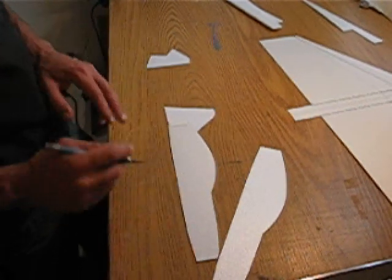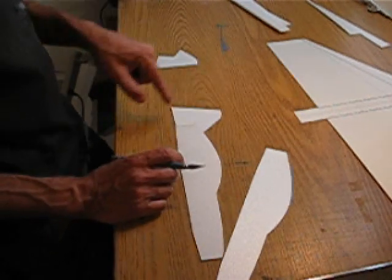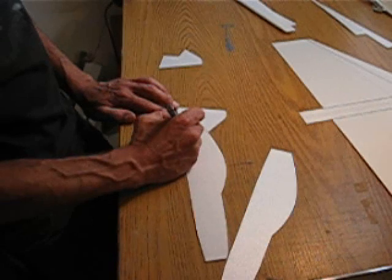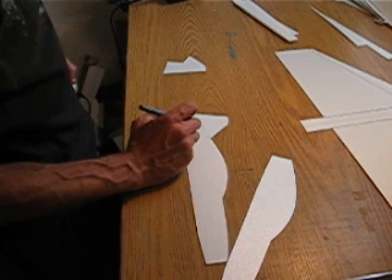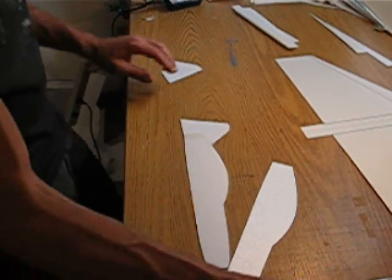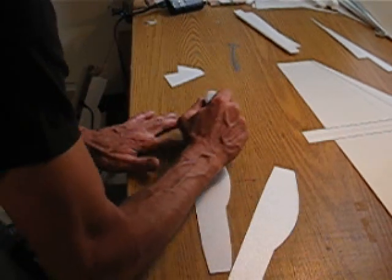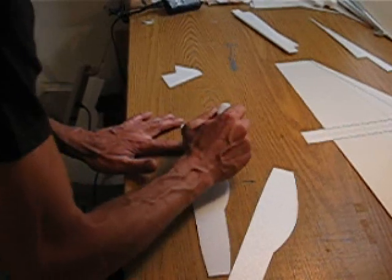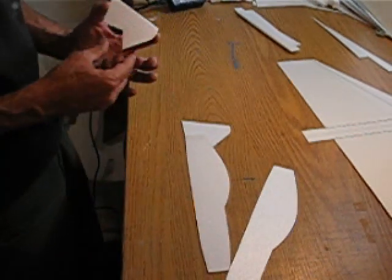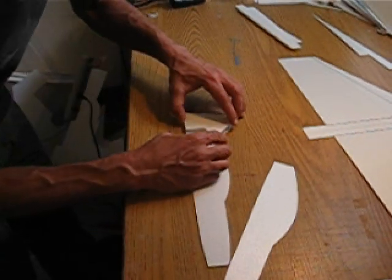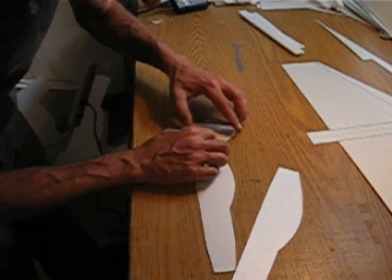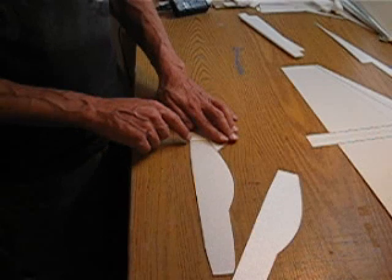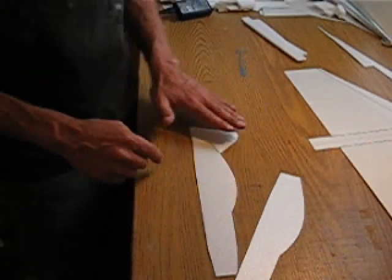Okay, so we attach the rudder with a piece of hinge tape. Remove the backing, throw some CA on the parts, line it up, lay it down. I just line it up on these two corners, everything else fits if you do that.